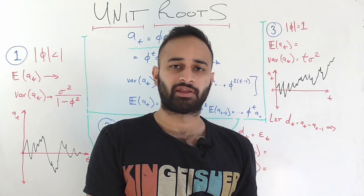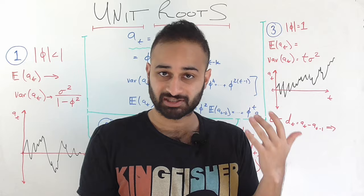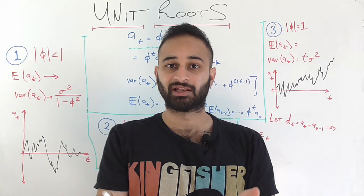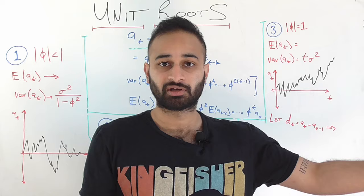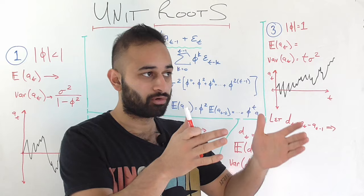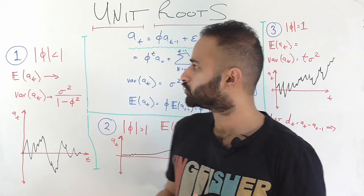If we have a time series with a unit root, then it's not stationary and we cannot apply our typical AR, MA, ARMA models blindly. We have to do some transformations to remove the unit root from the time series. And even if we can't do any transformations, at least we should be aware that this time series has a unit root so we can try some other methods of analysis on it.